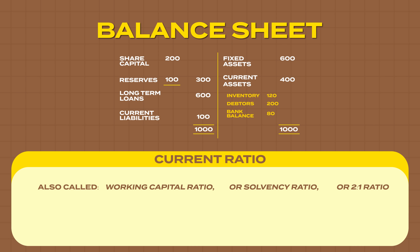What is the formula for current ratio? Current assets divided by current liabilities. How much are the current assets of this company? 400. Current liabilities? 100. So the current ratio is 4 is to 1. The ideal current ratio is 2 is to 1. If you're running a business, you would do well to monitor this ratio continuously and try not to let it go out of hand.